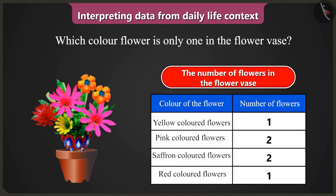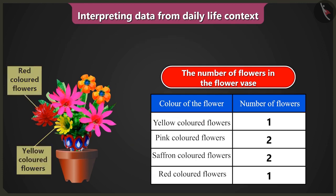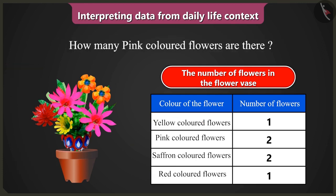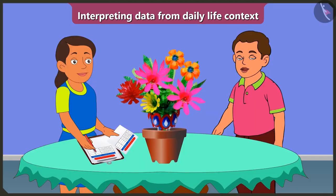Which color flower is only one in the flowers? Yellow and red colored flowers are one each. How many pink colored flowers are there? There are two pink colored flowers. Well done, Bubbly. Thank you.